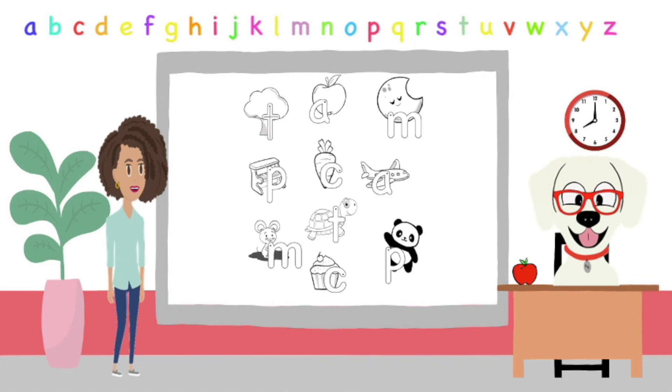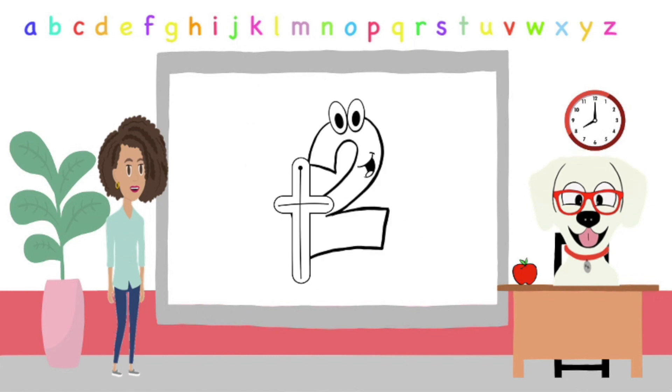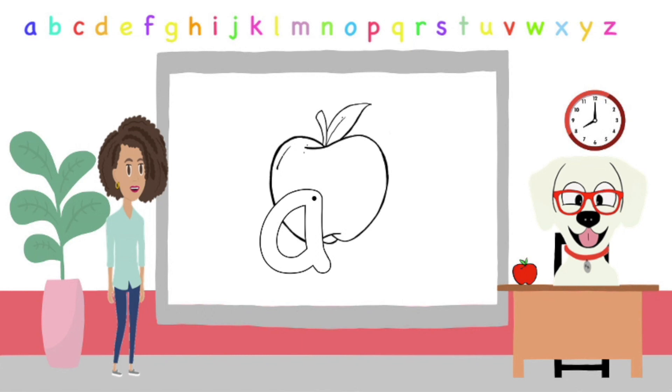In our first lesson, we will review all of our previously learned sounds, starting with the letter T. The letter T says T for T, T, T, Two. Now follow along and draw the letter T. Here we have the letter A for A, A, Apple. Let's draw the letter A. Good job.